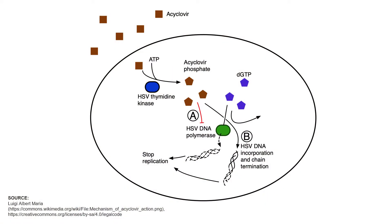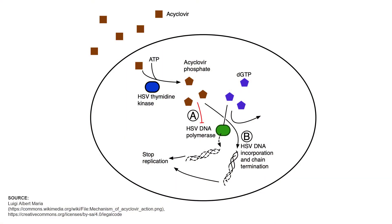Acyclovir is a nucleoside analog that specifically inhibits the synthesis of viral DNA — and I emphasize specifically, meaning it doesn't affect human DNA. It only exerts its effect in cells that are already infected with herpes virus, because it needs a virally encoded enzyme to become activated in the first place. This is a big part of the reason why this drug is so safe and well tolerated.